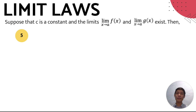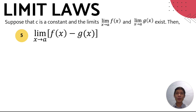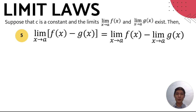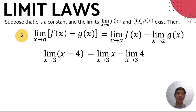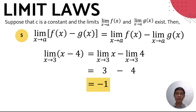The fifth limit law states that the limit of a difference is equal to the difference of the limits: the limit of f(x) − g(x) as x approaches a equals the limit of f(x) as x approaches a minus the limit of g(x) as x approaches a. Example: find the limit of x − 4 as x approaches 3. Rewriting: the limit of x as x approaches 3 minus the limit of 4 as x approaches 3, which gives us 3 − 4, equal to negative 1. Therefore, the limit of x − 4 as x approaches 3 is negative 1.